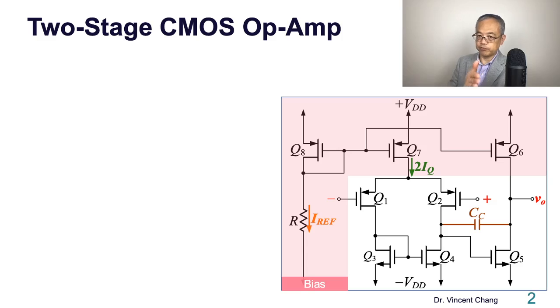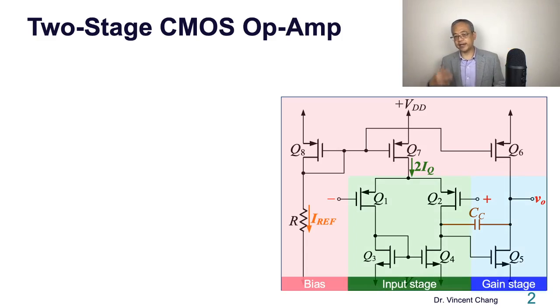Differential first stage, input stage, and gain stage, the output stage. Usually the CMOS op-amp is designed in low power applications. Of course you can add a third stage if you're a designer.